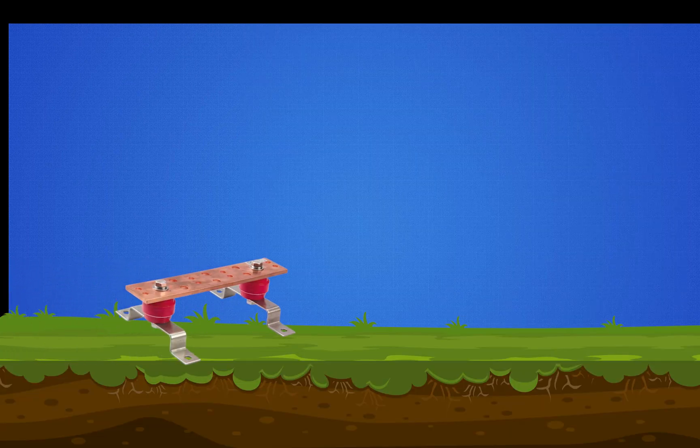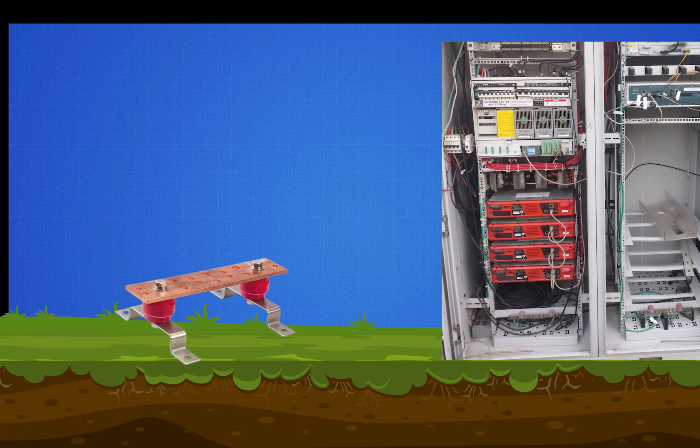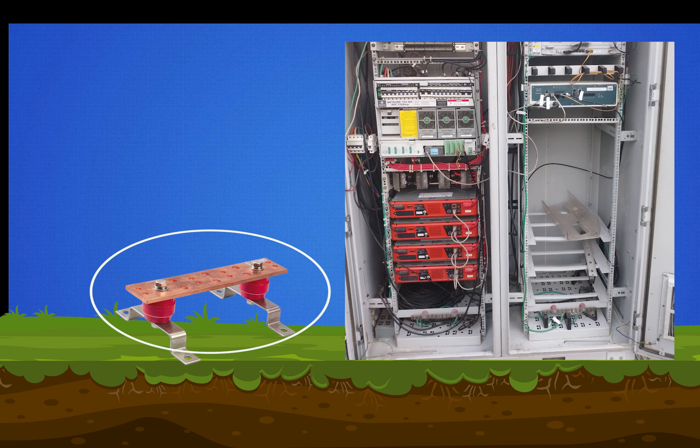Now, let's shift our focus to the external grounding bar, which is located outside the telecom equipment room, often in close proximity to an external cabinet.